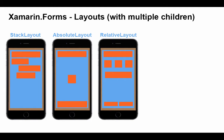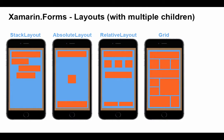Then we have relative layouts. In a relative layout, we use constraints to place views relative to one another or to page margins and references. This is very similar to working with storyboards in Xcode on the iOS side. Our fourth layout for multiple children is a grid layout. Working within a table-type layout, we can specify rows and columns, and items can span multiple rows or multiple columns.